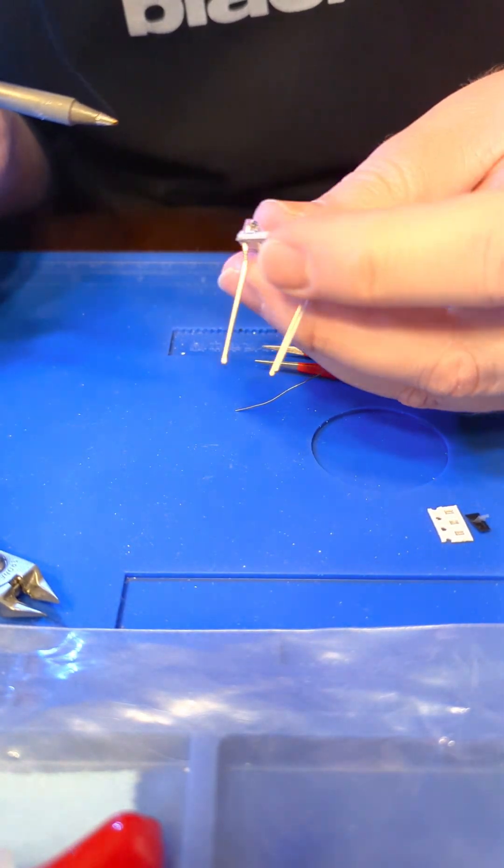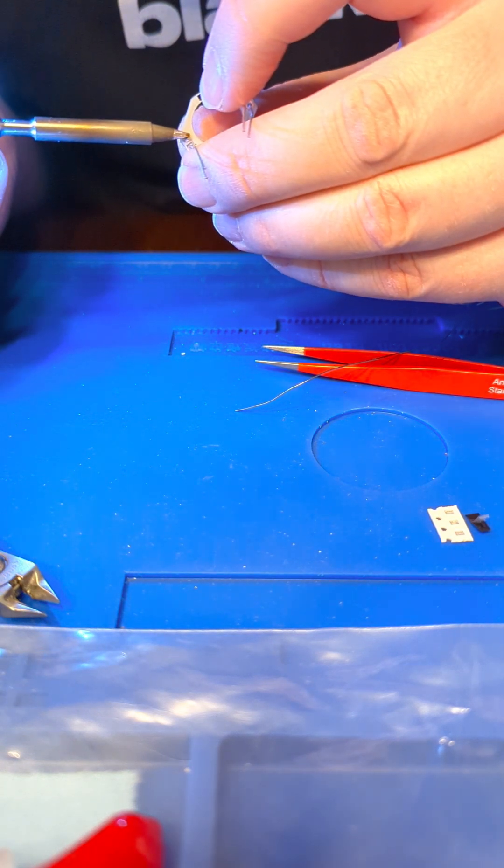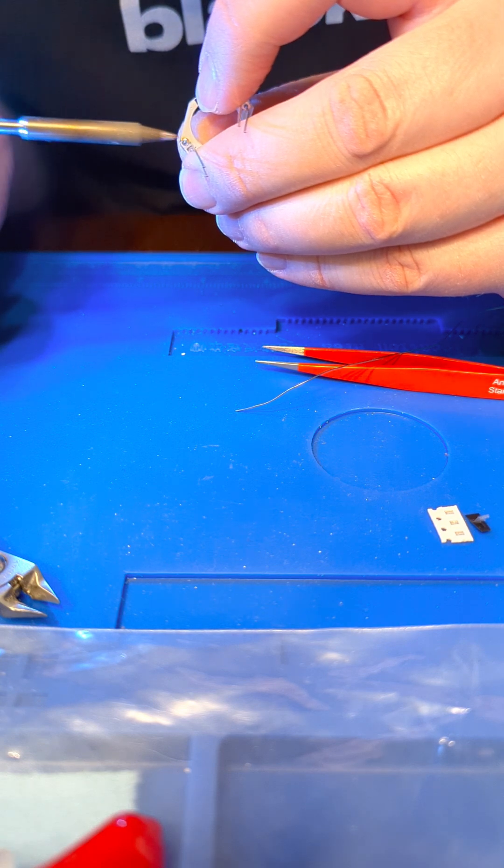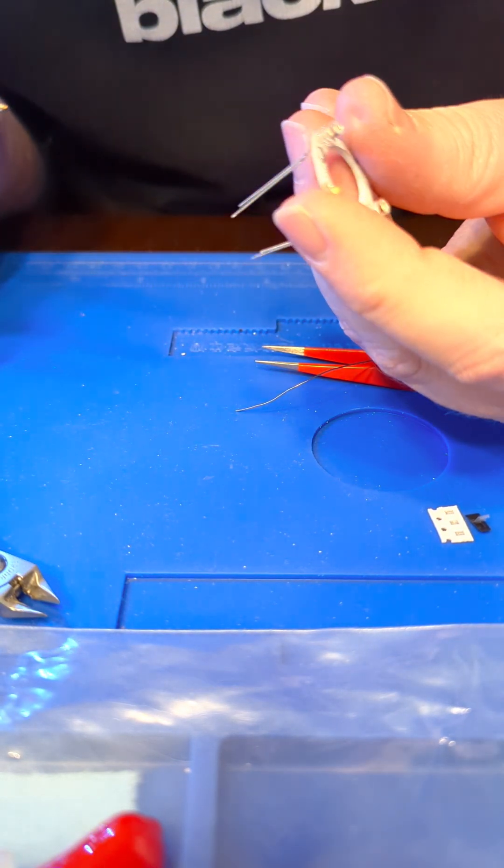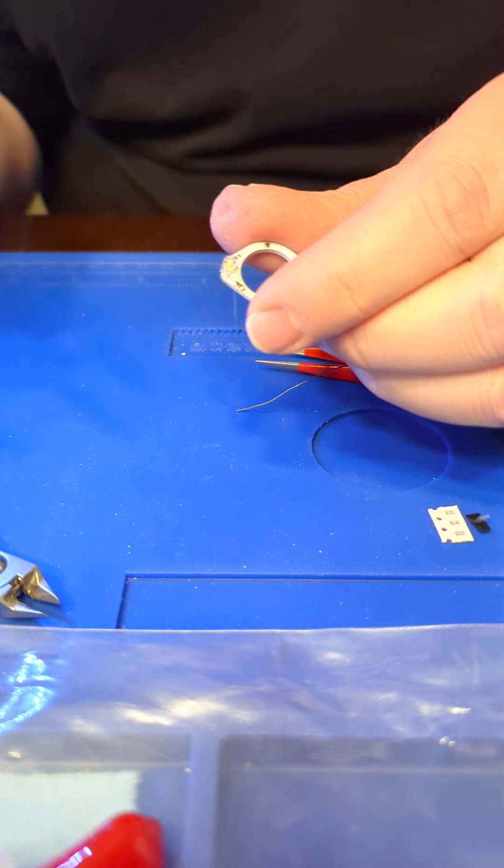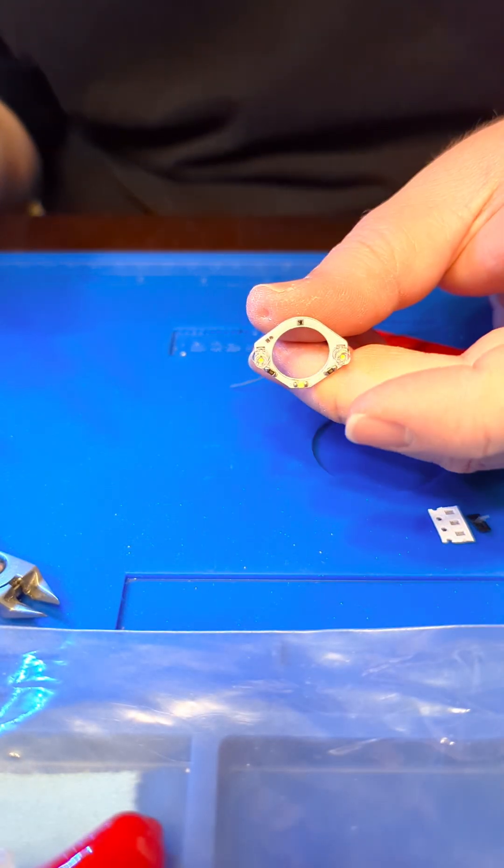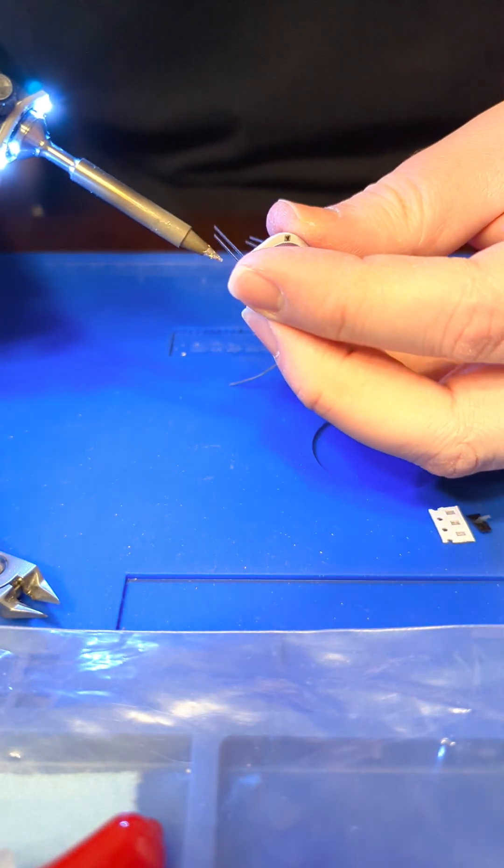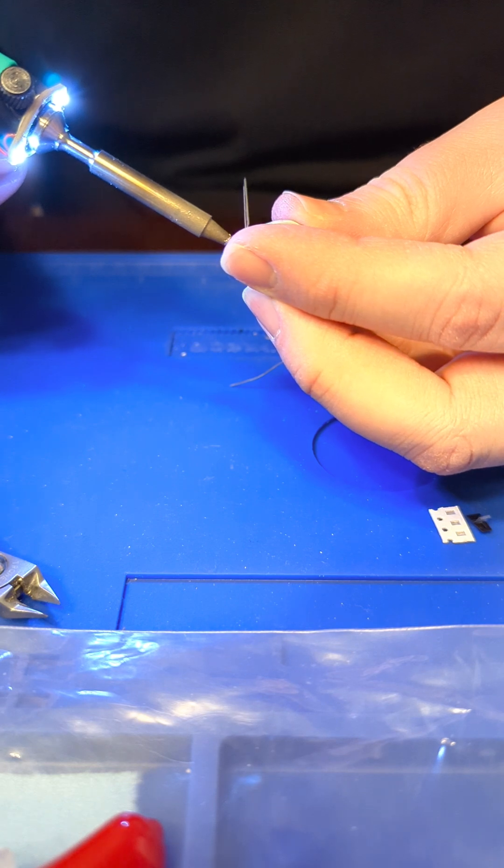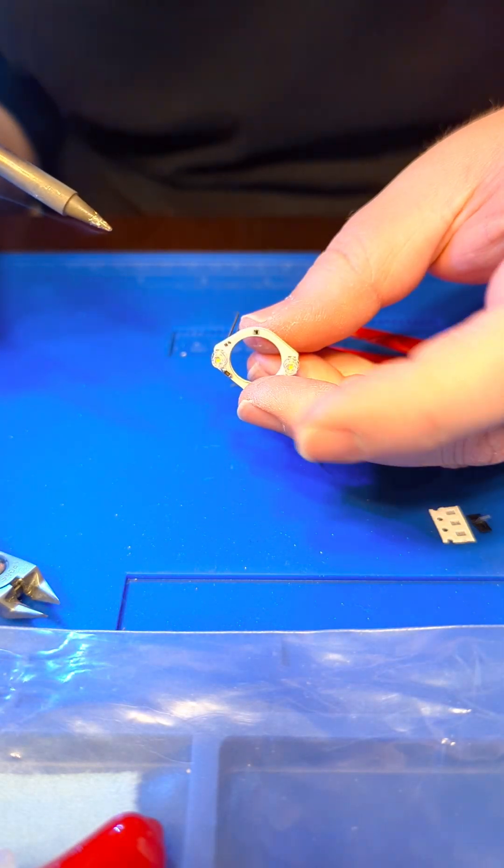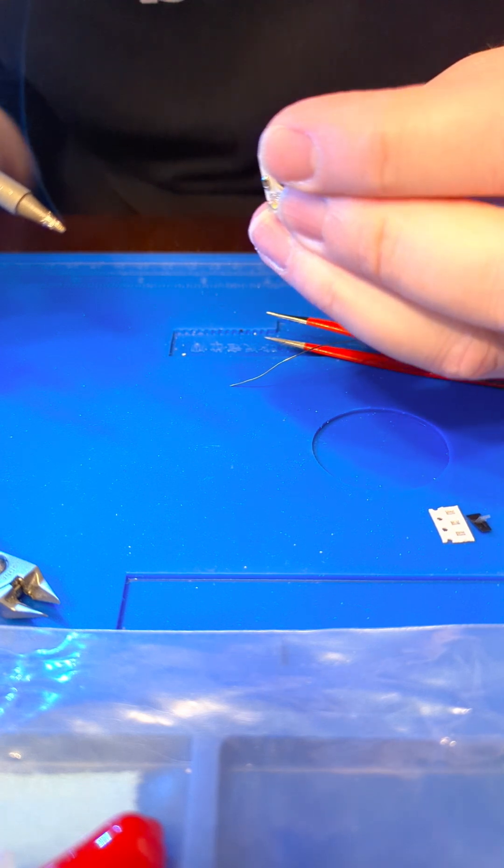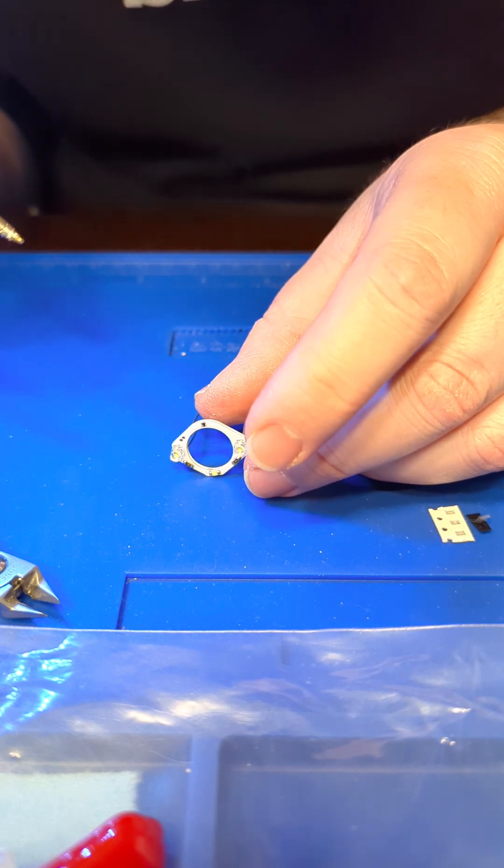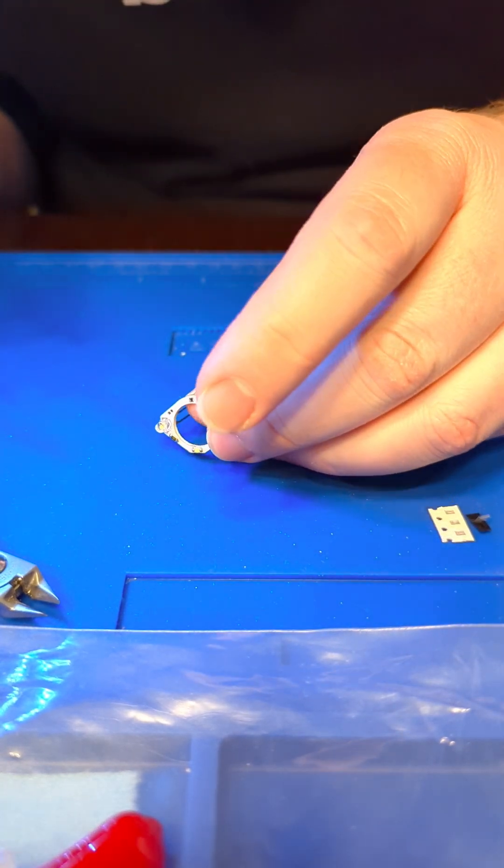And then repeat on the other side. Don't touch it too long, you can burn up your LEDs. With these, you just want to make sure that they're flush and flat with the board. Those look pretty good. You could angle it in a little bit if you want.